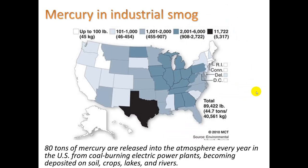Mercury is a huge component of industrial smog. In fact, 80 tons of mercury are released into the atmosphere every year in the U.S. from coal-burning electric power plants, becoming deposited on soil, crops, lakes, and rivers. You can see which states are worst — Texas is really bad, and the northeastern U.S. is also quite bad. This is coal country — West Virginia has lots of coal mines, and coal is burned heavily for producing electricity.